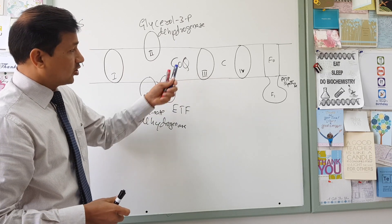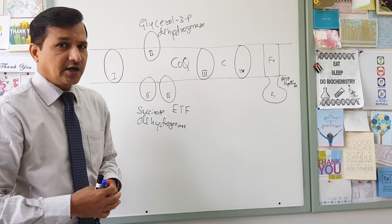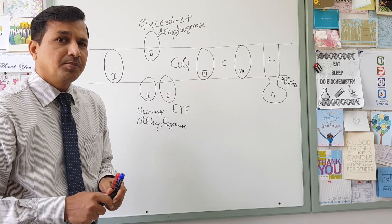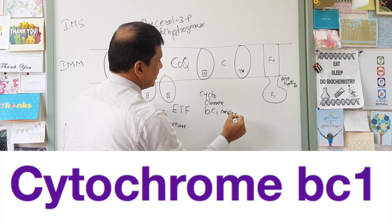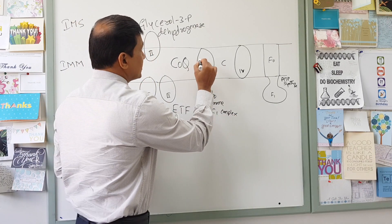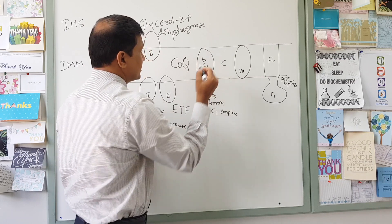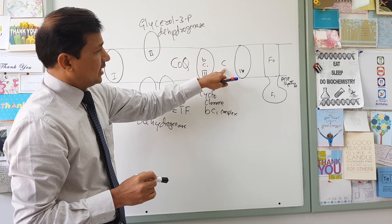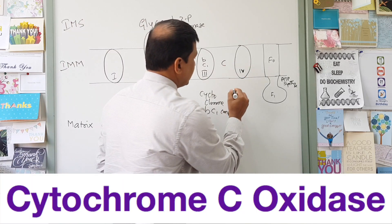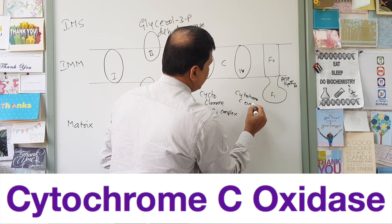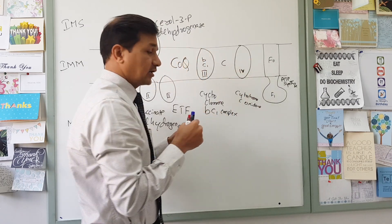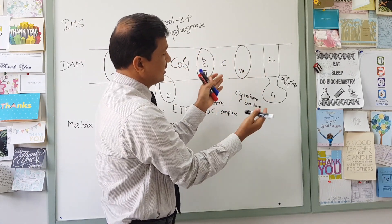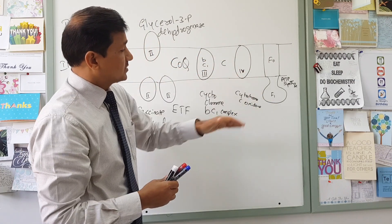Coenzyme Q is the ubiquinone mobile complex in the electron transport chain. Complex 3 is referred to as the cytochrome BC1 complex, containing cytochrome B and cytochrome C1. Cytochrome C is the second mobile complex. Complex 4 is cytochrome C oxidase, which accepts electrons from cytochrome C and donates them to oxygen.